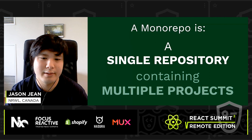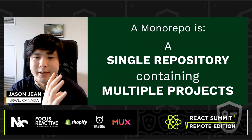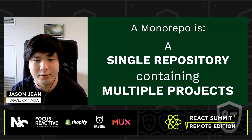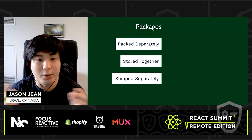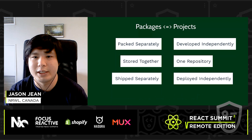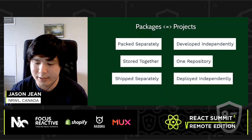A monorepo is just a single repository that has multiple projects — one piece of code living in one directory and another piece living in another directory, but it's all one version control. I think of it like a warehouse for code. In a warehouse, you have packages packed separately by different people, stored together in one warehouse, but shipped separately to different people. The same is true for projects within a monorepo: they're developed independently within the repository, but deployed independently.